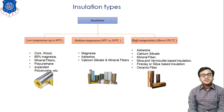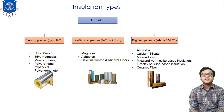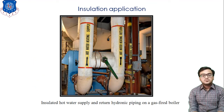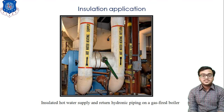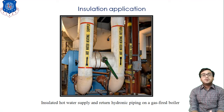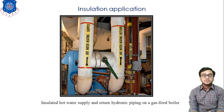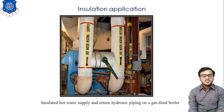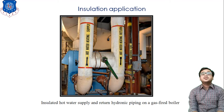We have lots of materials available for insulation, but in mechanical engineering we generally prefer glass wool. Now I would like to discuss the applications of insulation. Since we belong to the mechanical family, we are well aware of insulation applications, which we have already studied in semester five in Heat Transfer. The first application is to insulate the hot water supply and return hydronic piping of a gas-fired boiler. In a thermal power plant, the steam pipe is covered with an insulator so that heat losses are minimized.